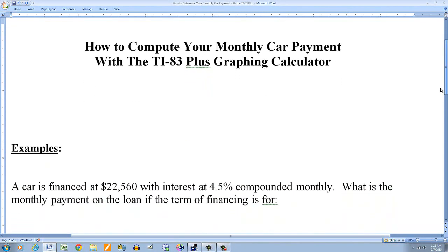So let's look at the examples. Let's suppose that after a down payment, tax and license, the financing is going to be for $22,560. Let's suppose the interest rate is 4.5% compounded monthly. And we want to ask now, what is the monthly payment on the loan if the term of financing is for...